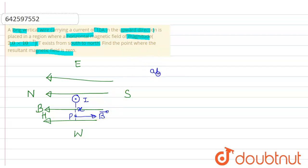So at point P, if net magnetic field becomes zero, then BH should be equals to B. This horizontal magnetic field BH should be equals to B.